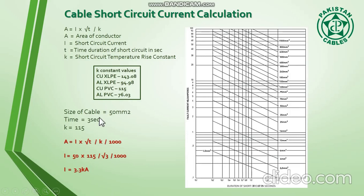For example, we select a cable size of 50mm² PVC cable. The K value for XLPE is different, and similarly the values for copper and aluminium are different from each other.